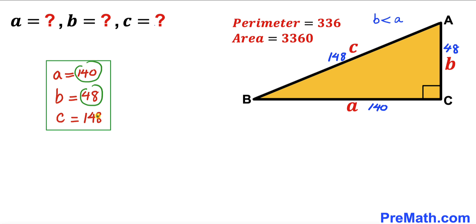So our final answers are: a equals 140 units, b equals 48 units, and c equals 148 units. Thanks for watching, and please don't forget to subscribe to the channel for more exciting videos.